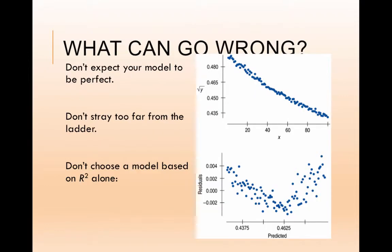So what can go wrong? The first thing is that you expect the model to be perfect. And it won't be. Okay? We're re-expressing it. We're trying to make it more straight, more nearly linear. So it's not necessarily going to be perfect. And that's okay.